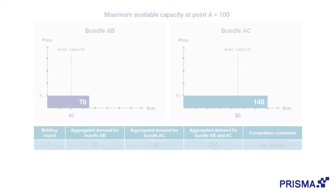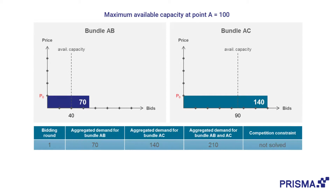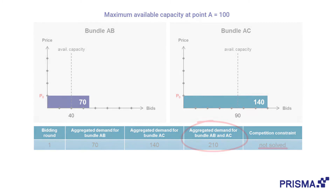In the first auction round, the shippers bid for an aggregated 70 capacity at bundle AB and 140 at bundle AC. Since both auctions together exceed the competition constraint of 100, the auctions will proceed with the first large price step.